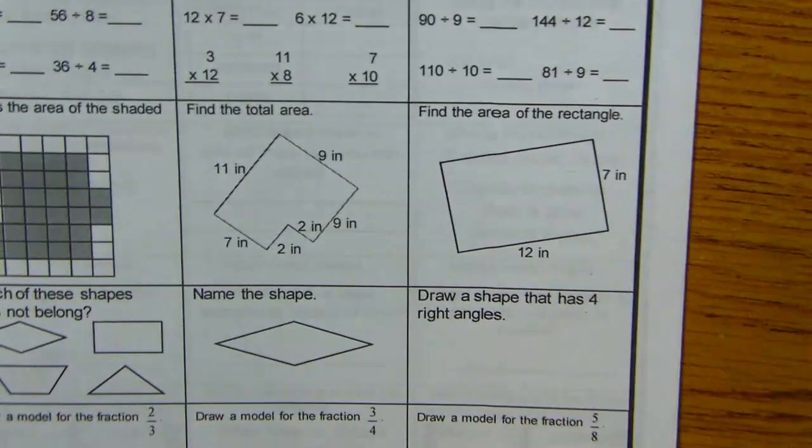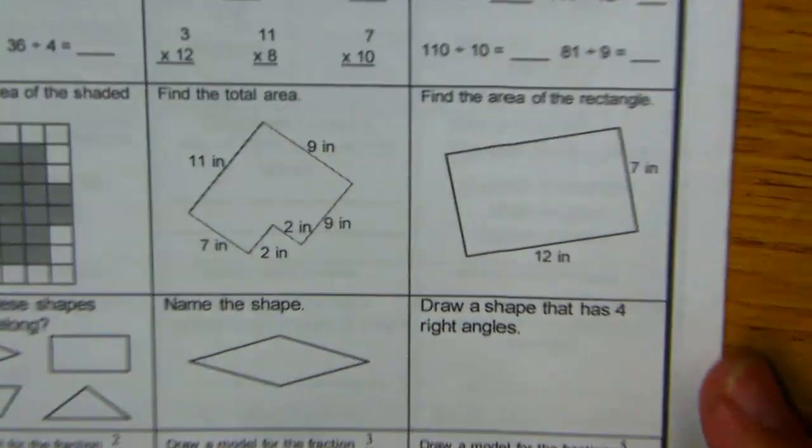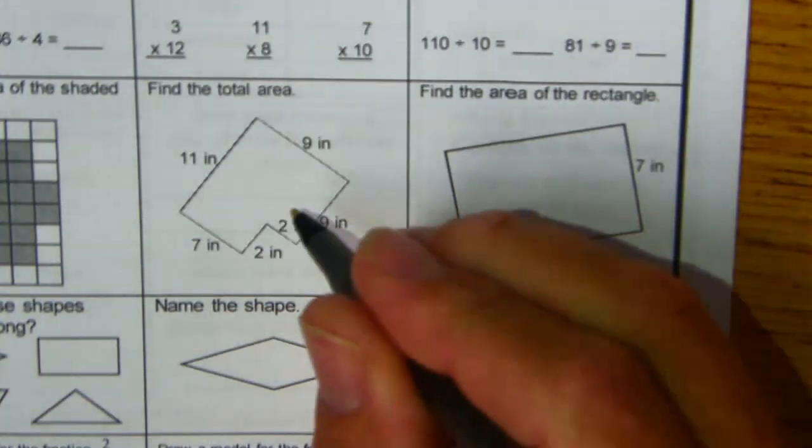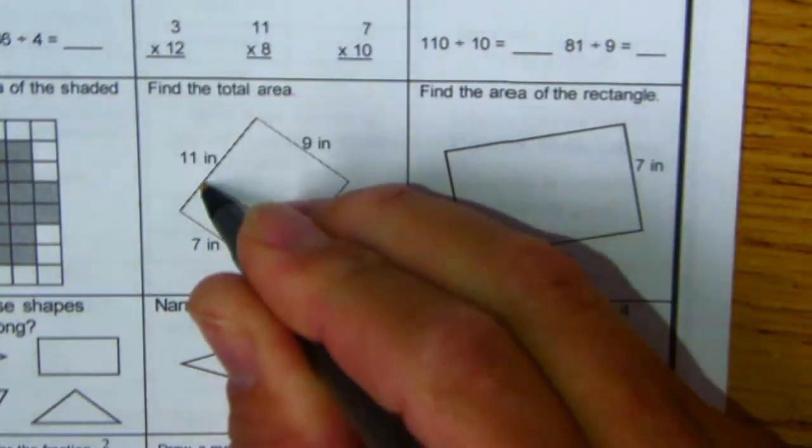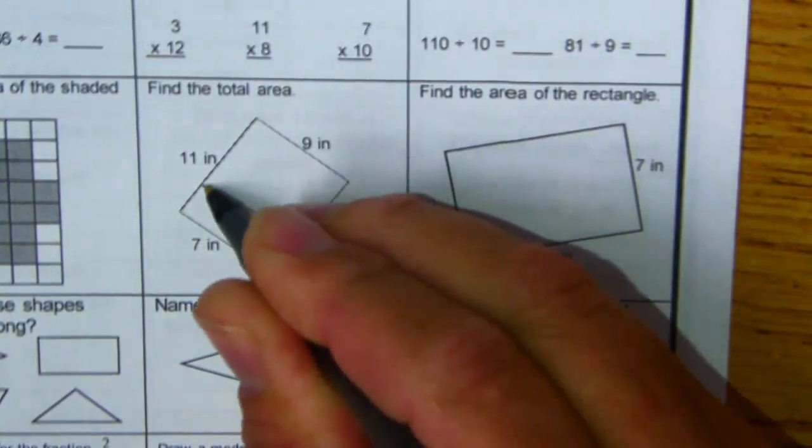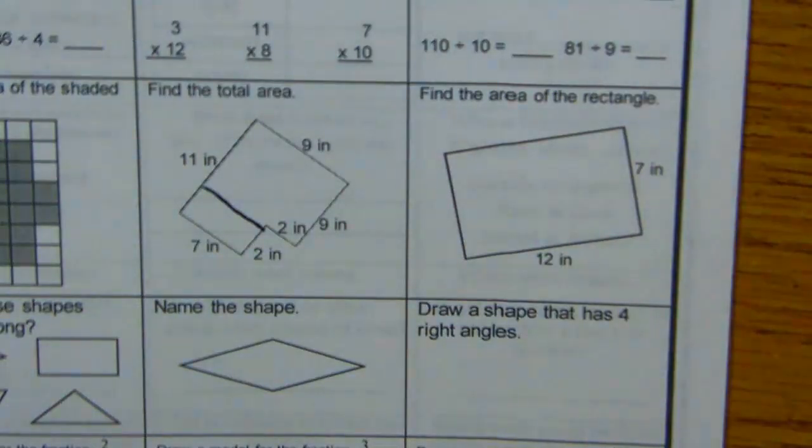So we have this irregular, awkward shape. You've got to figure out where to cut it. I'm going to cut it right here. Now you just need to find the area of the two regular shapes.